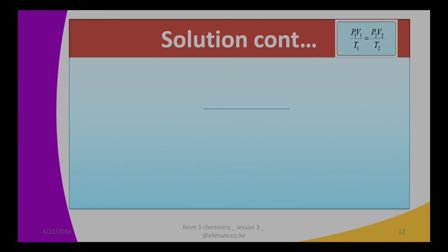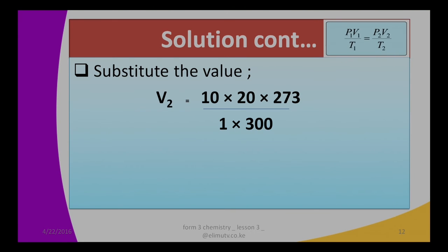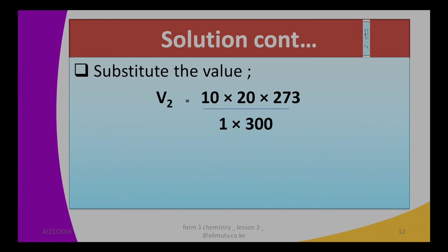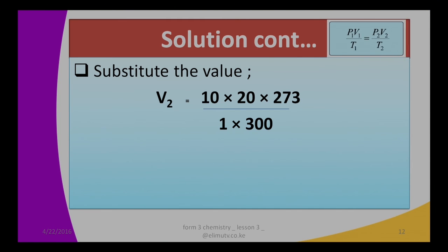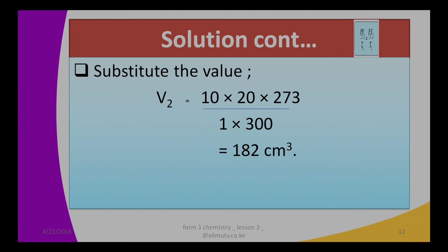Now we substitute the values into the equation we derived. V2 equals 10 atmospheres (P1) times 20 centimeters cubed (V1) times 300 Kelvin (T2), all divided by 1 atmosphere (P2) times 273 Kelvin (T1). Carrying out the calculation, we get 182 centimeters cubed, which becomes our volume 2 — the final volume.